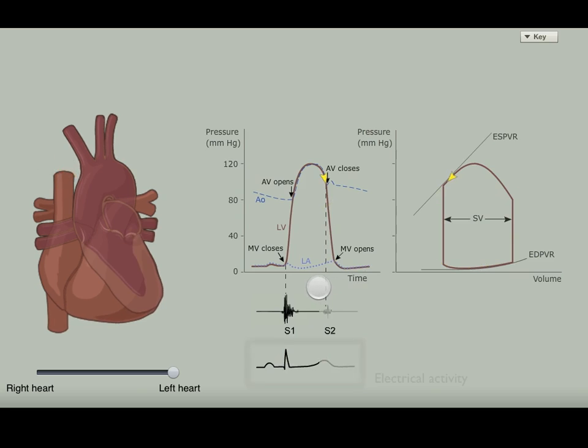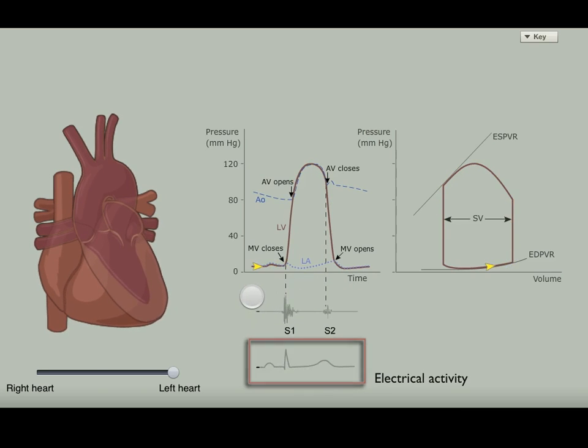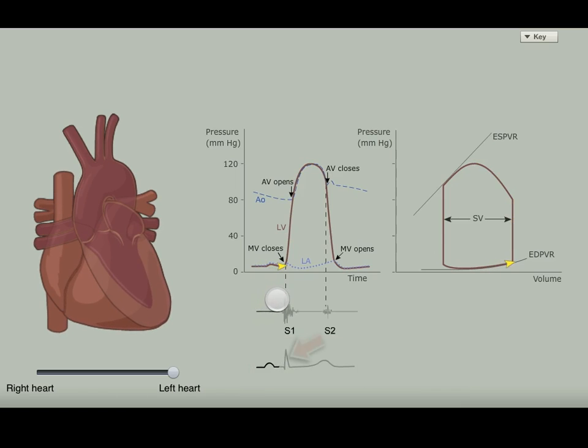You can also see that the electrical activity of the heart, the lower middle tracing, precedes mechanical activity. For example, the sharp electrical spike represents electricity spreading through the ventricles. This initiates the LV contraction that shows up as the large LV pressure rise.